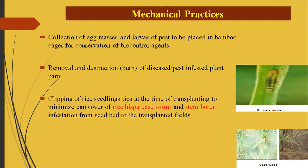Now for mechanical practices: the first is hand collection — collecting egg masses at the tip of seedlings, and seedlings damaged by stem borer larvae. Remove and destroy them, or place them in bamboo cages for conservation of biological control agents. Collection of affected plants, egg masses, or larval-infested plant parts followed by destruction is important.